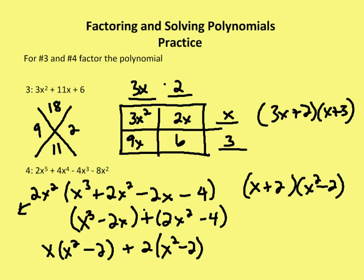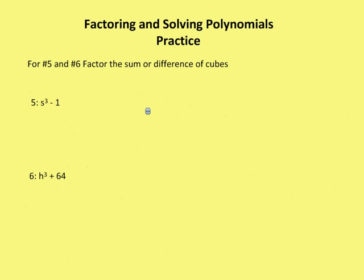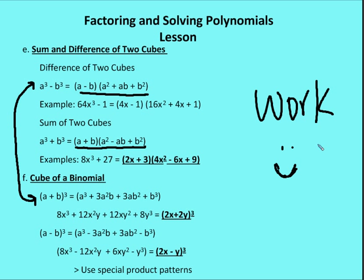Problems 5 and 6, I'm going to factor the sum or difference of cubes. So here I have a difference of two cubes, s cubed. I can take the cube root of that and have a variable that has an integer coefficient with an integer exponent. Same here. I have h plus 4. The cube root of 64 is going to be 4. So let's try the first problem.